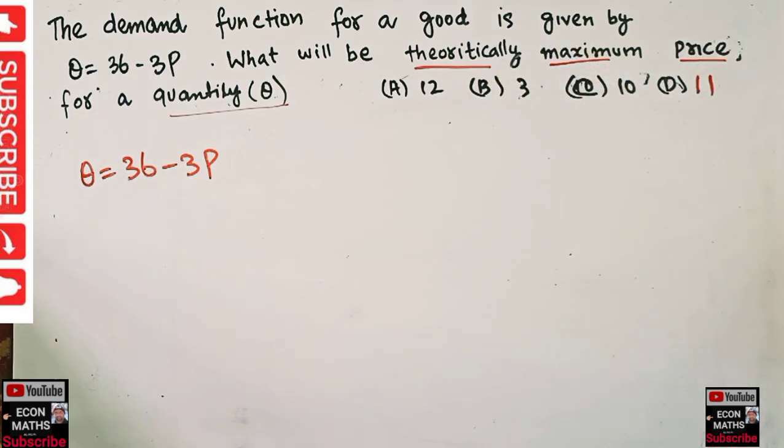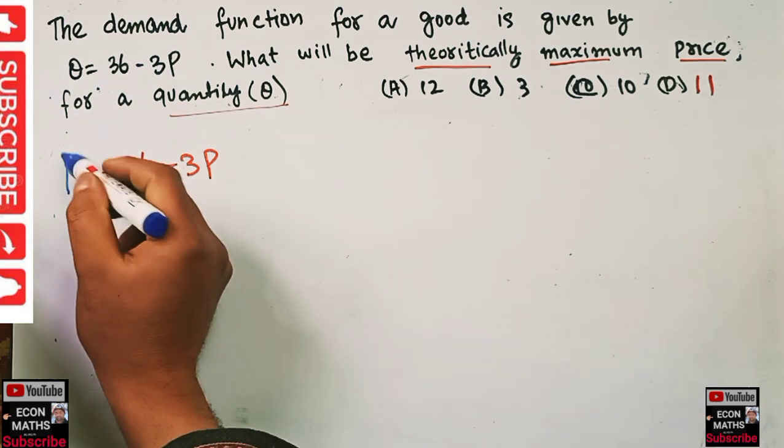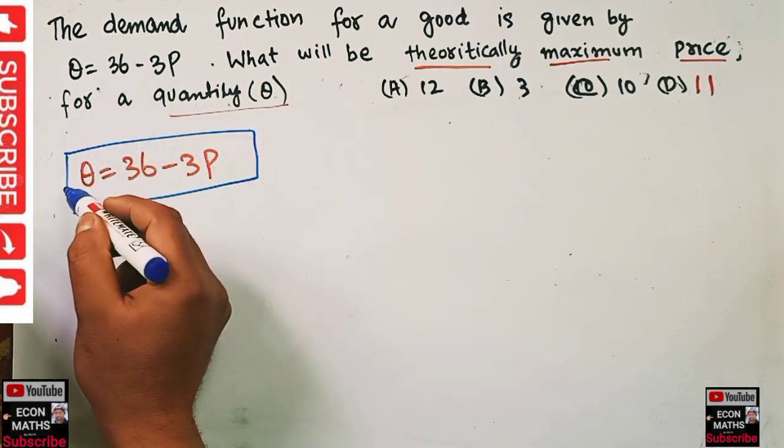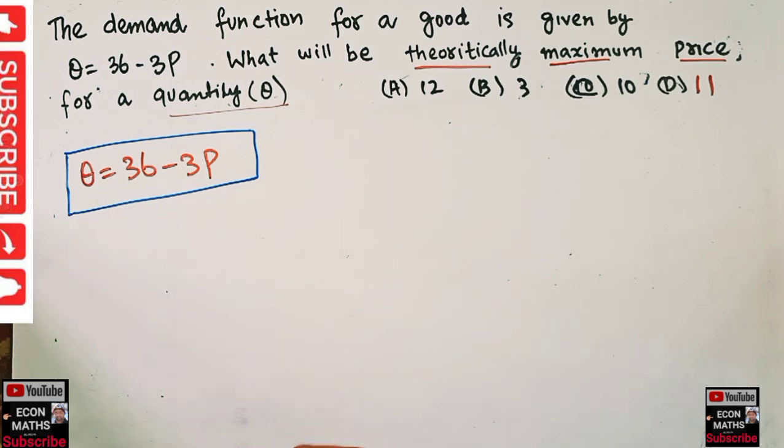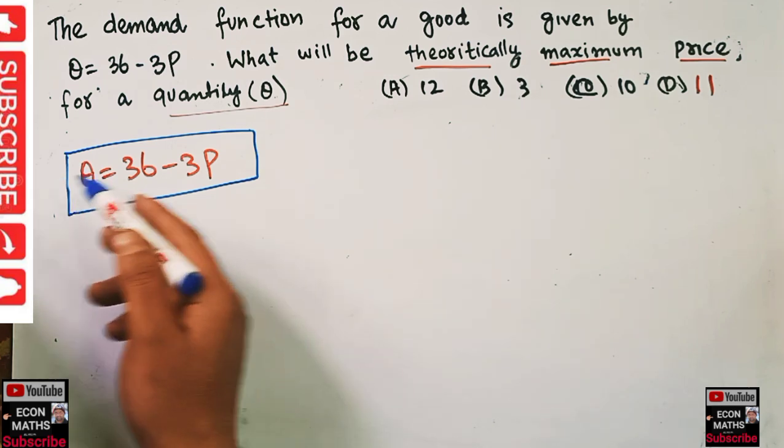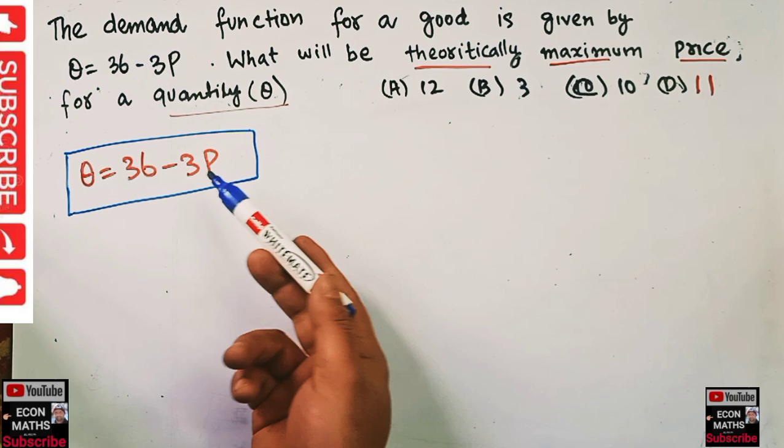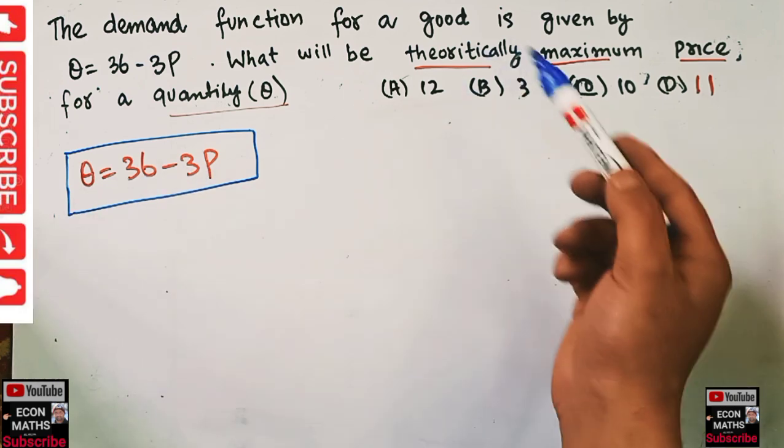There are two ways we can find out the theoretically maximum price. Let me write the first method. You know there is a normal inverse relationship between price and quantity: price decreases, quantity increases.